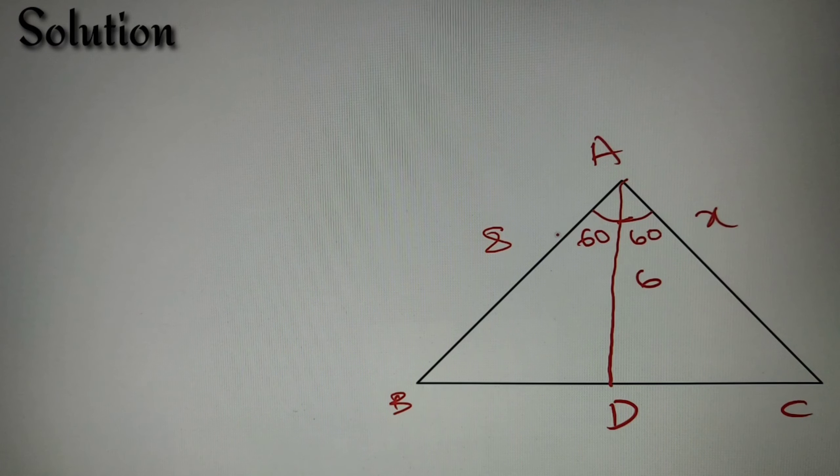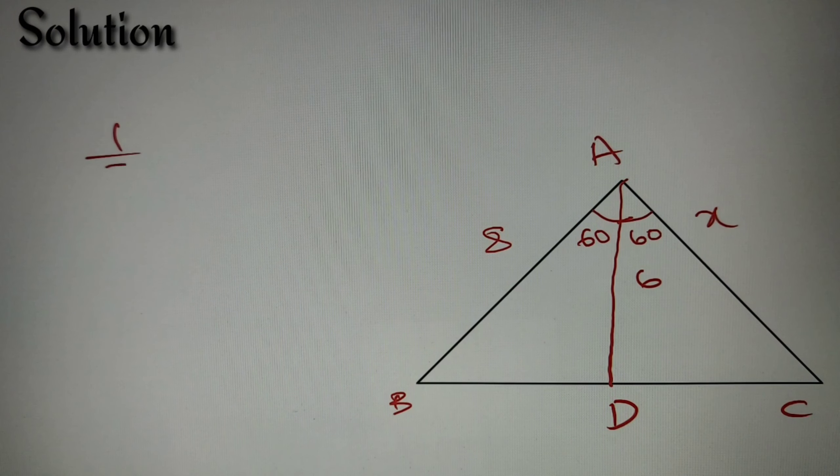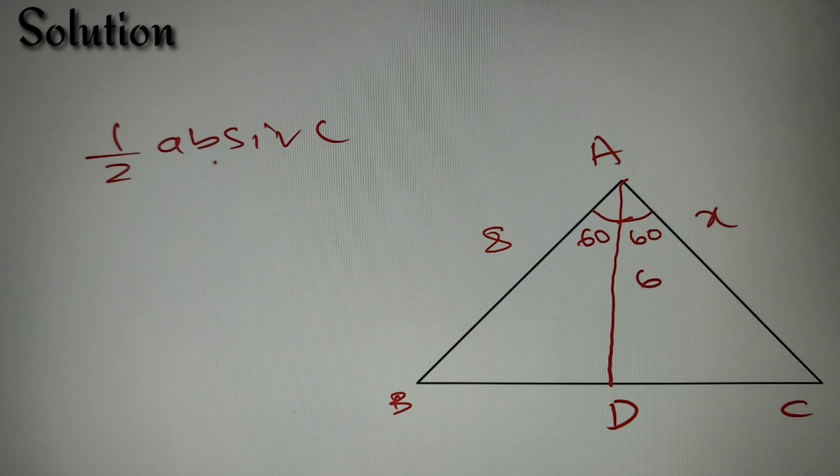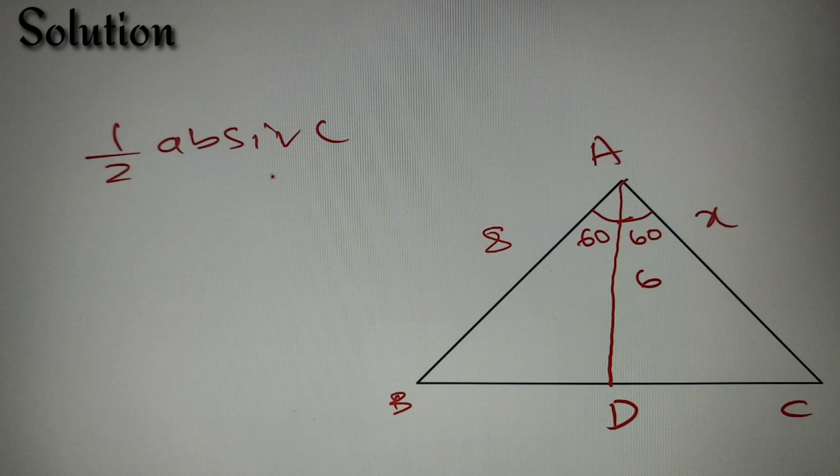Now we can solve this question very easily if we know one simple formula: area of a triangle is equal to half AB sine C, where A and B are the adjacent sides of the triangle and C is the angle between them.